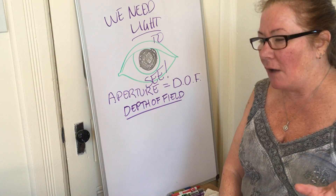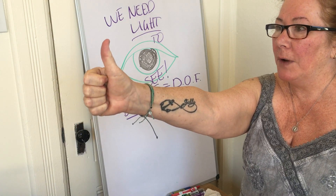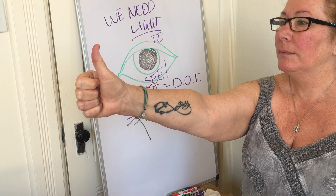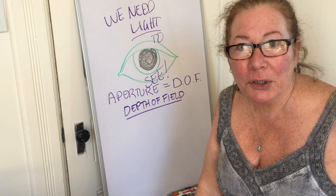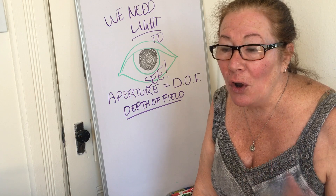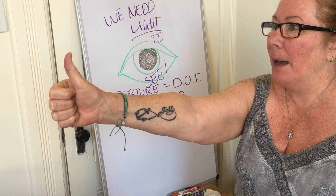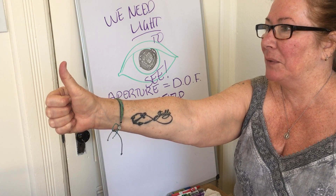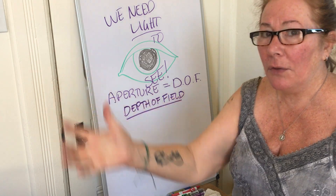I want you to do me a favor. Close one eye — or you can keep both eyes open. Hold your thumb out in front of you and focus on your thumb. When you do this, what happens to the background? It gets blurry, doesn't it? This is why our photographs don't always turn out how we want them to. Our eyes naturally cannot focus on your thumb and the background at the same time. Try looking at the background — your thumb goes out of focus and gets blurry.